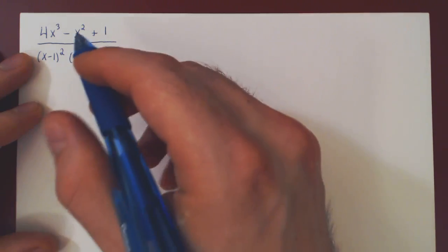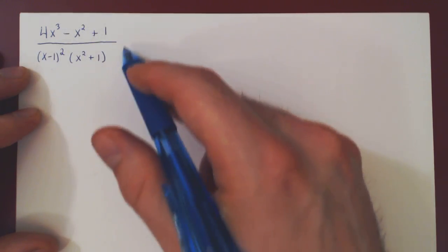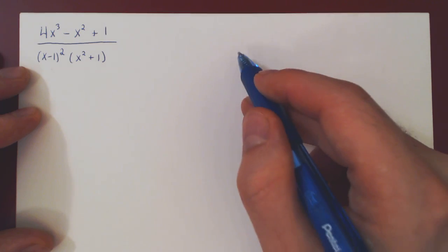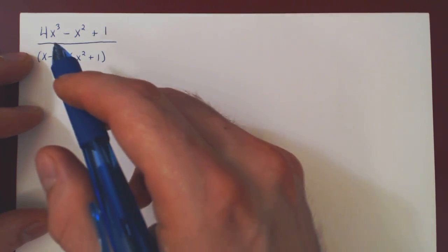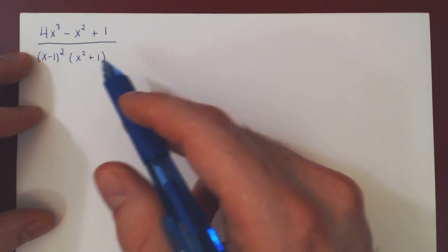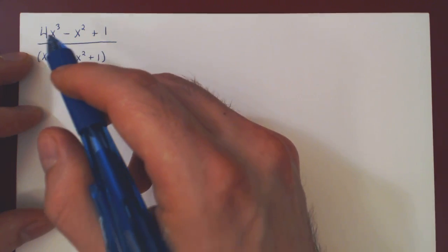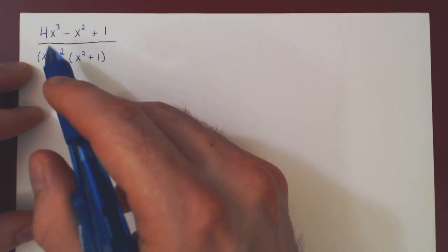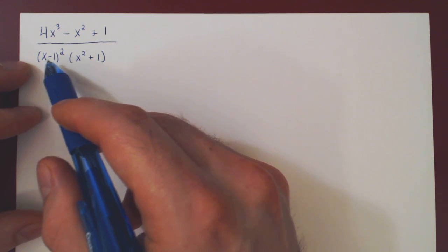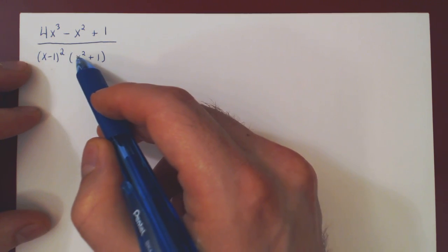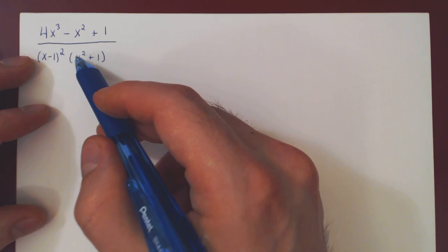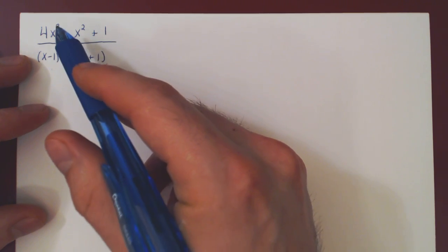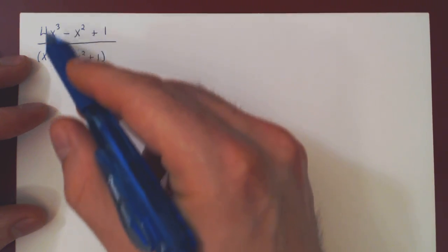In this video, we will find the partial fraction decomposition of a single rational function, and then use our decomposition to integrate this function with respect to x. The first question is: can we decompose this rational function into a sum of partial fractions, only if the degree of the numerator is strictly less than the degree of the denominator? The degree of our numerator is 3. If you multiply the denominator out, you'll have a quadratic term times a quadratic term, which gives an x to the 4 term — degree 4. Since 3 is strictly smaller than 4, we are good to go.